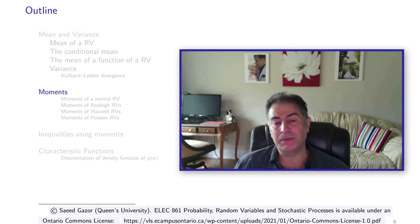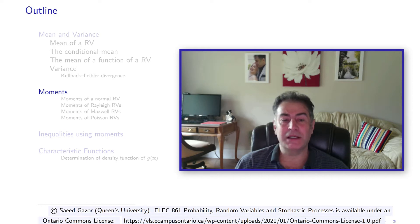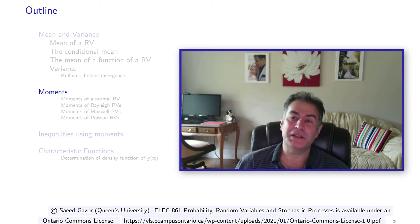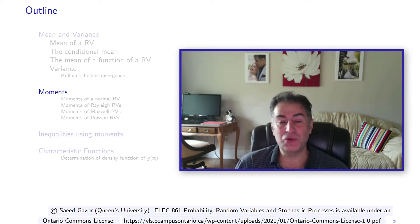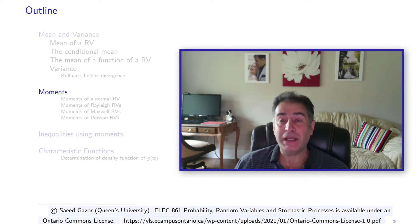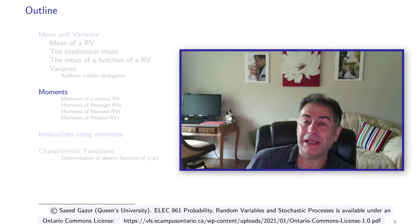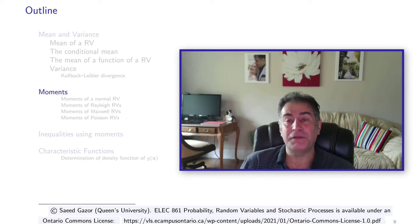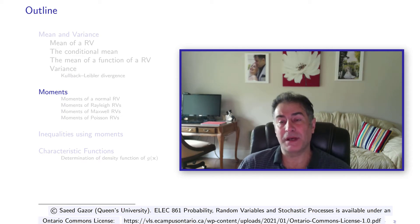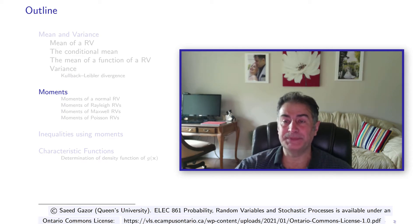As an example, we will calculate different moments of a normal distribution, Rayleigh, Maxwell, and Poisson distributions. You should be able to calculate and define different moments of a random variable.